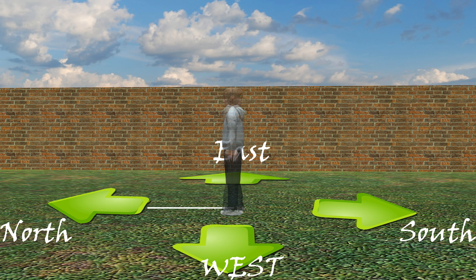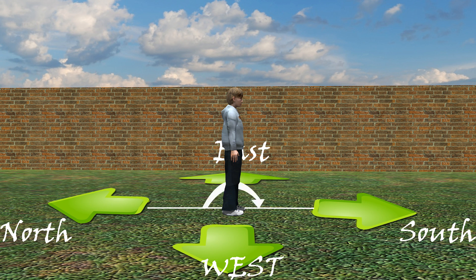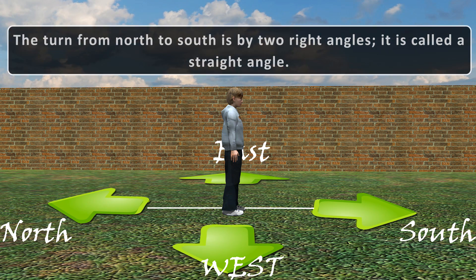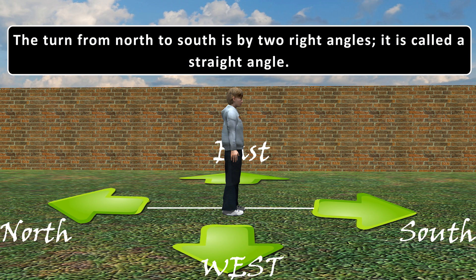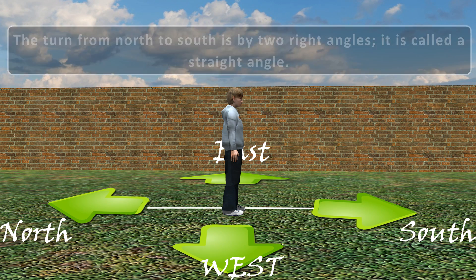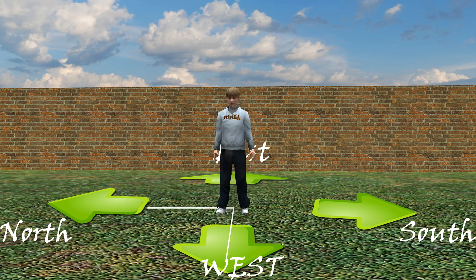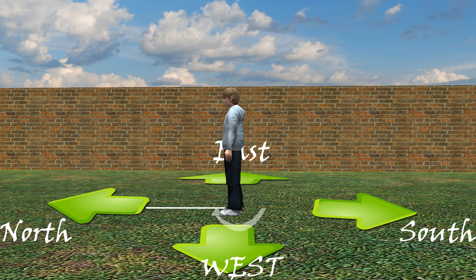So, we have observed that from facing north to facing south, you have turned by two right angles. Or we can say you have taken a single turn by two right angles. The turn from north to south is by two right angles — it is called a straight angle. Similarly, when you stand facing south and turn by a straight angle, you will now face north.